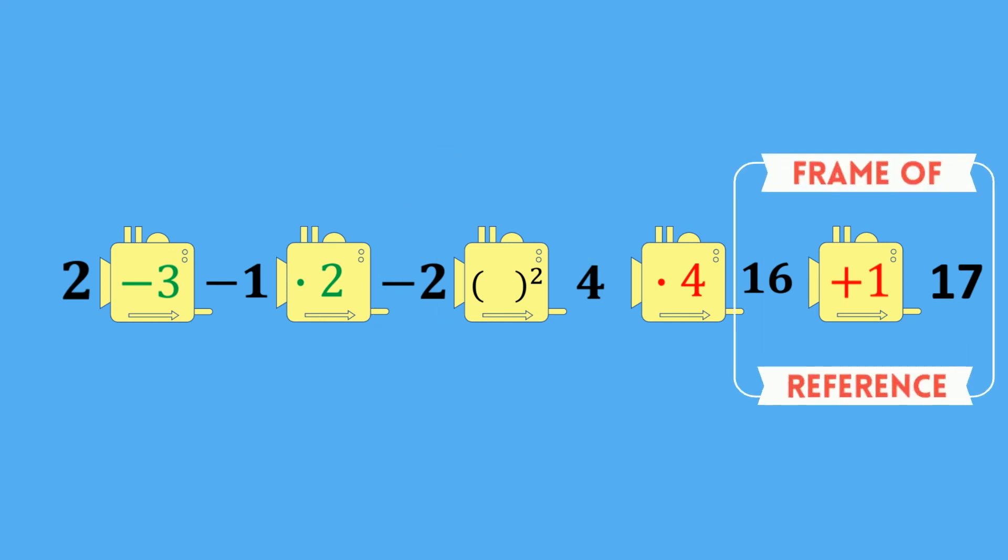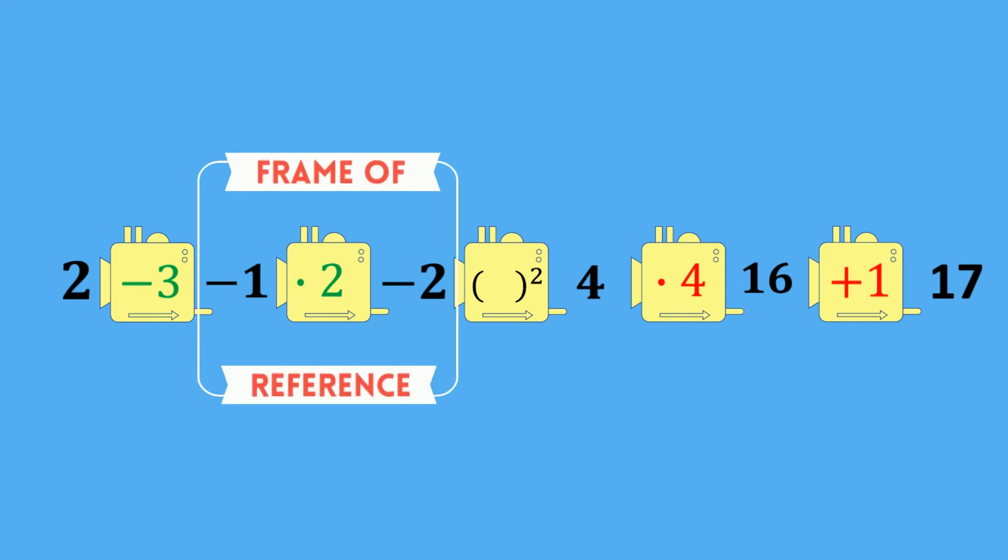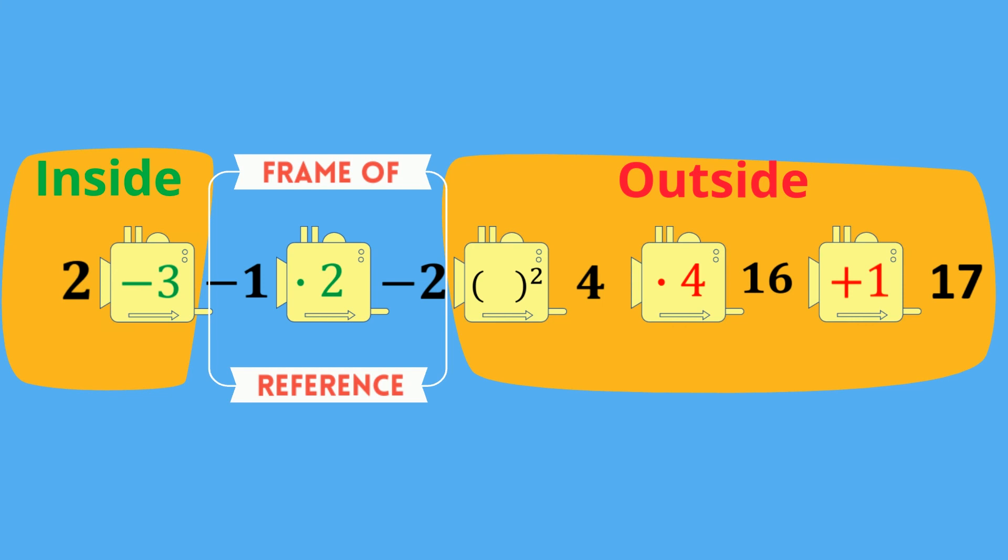Most importantly, we can change our frame of reference, and hence change what gets to be called an outside or an inside transformation. As long as we still read them in the correct way, we will still come up with the correct graph every single time.